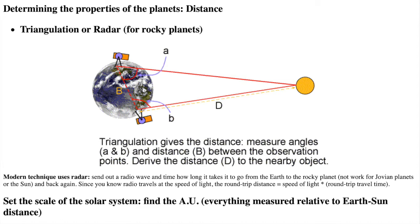A modern technique that works for the rocky planets is radar. We send out a radio wave and time how long it takes to go from the Earth to the rocky planet and back again. Since you know that radio travels at the speed of light, the round trip distance equals the speed of light times the round trip travel time. The distance to the planet is just half the round trip distance. This won't work for the Jovian planets or the sun since they don't have a solid surface to reflect the radio wave.